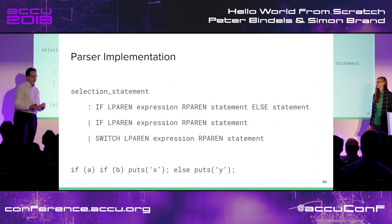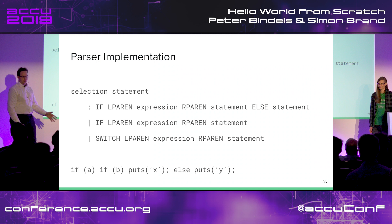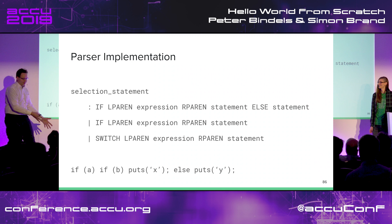Note the programmer humor: it started with yacc — yet another compiler compiler — then somebody said we need a better yacc, so we made bison, which is like a yacc but better. Then somebody said bison is good but we need something simpler, like part of a bison, so we called it Antlr — which is part of a bison.